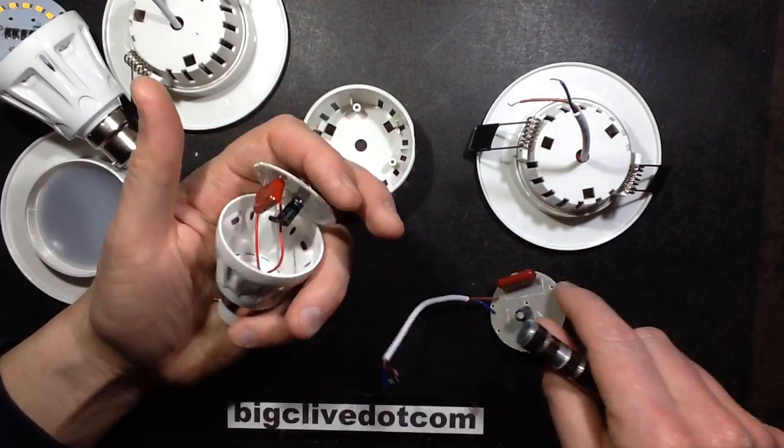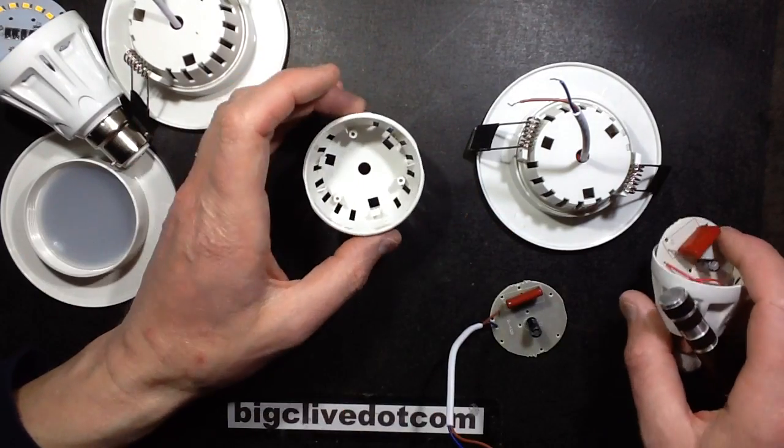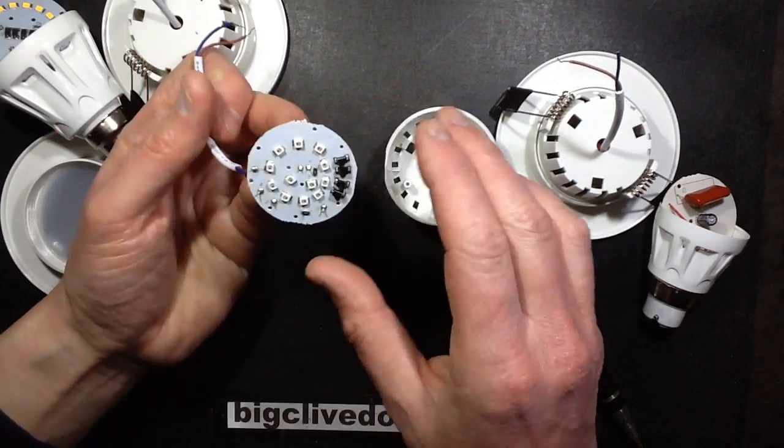It's quite interesting that instead of actually putting them into the housing though, they're actually putting them straight into the downlighter itself, the actual casing.